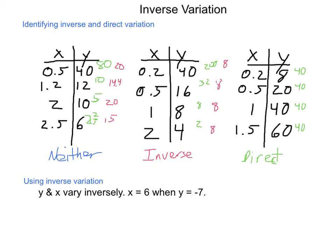Now, using inverse variation. If x and y vary inversely, x is 6 when y is negative 7, we need to find a couple things. We need to be able to find the constant of variation, and we need to be able to use this for other situations. So, our constant, we know, for inverse variation, is going to be the product of x and y. So, k is going to equal 6 times negative 7, which is going to equal negative 42.